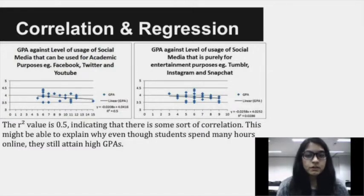However, for the scatter plot of GPA of student against level of usage of social media that can be used for academic purposes, the R-square value is 0.5, indicating that there is some correlation between the two variables. This might be able to explain certain outliers in the scatter plot of the student's GPA against hours of social media used in a day, that even though the student spends many hours online, he or she might be doing productive or informative things which could explain why they still attain high GPAs.